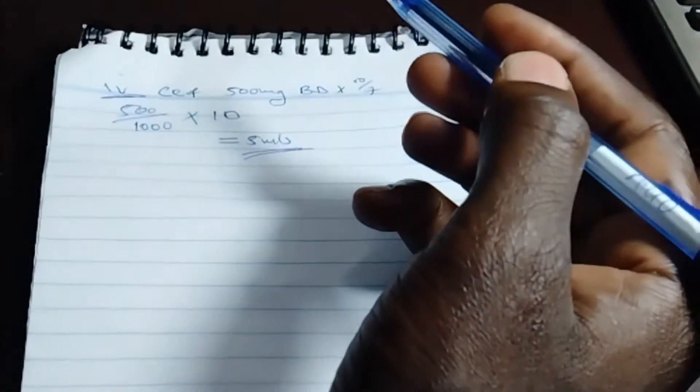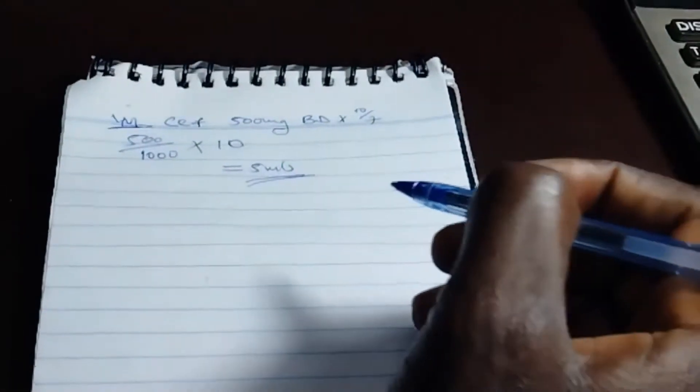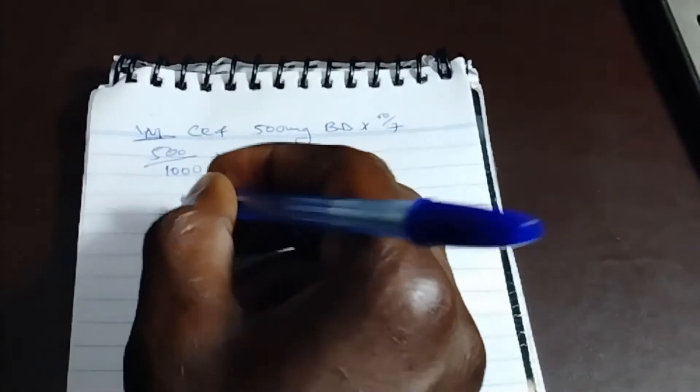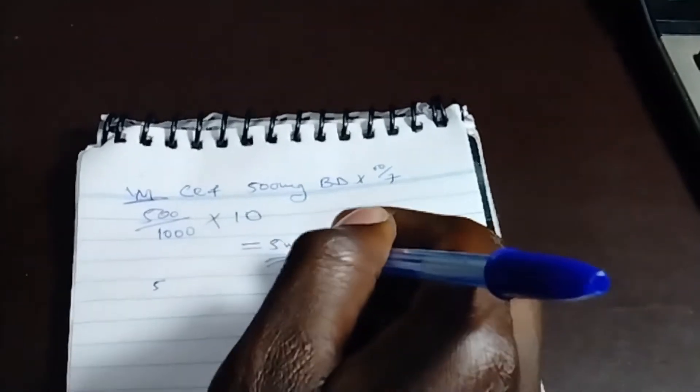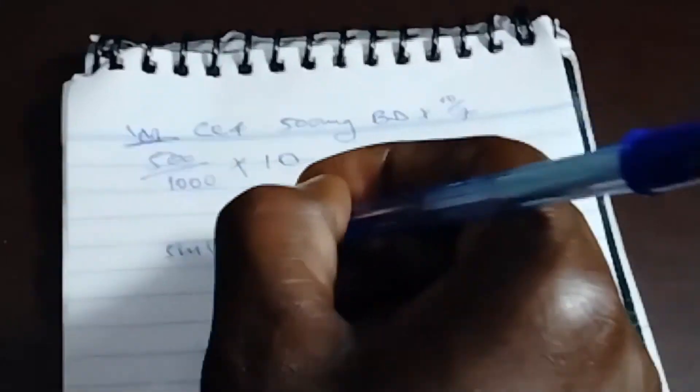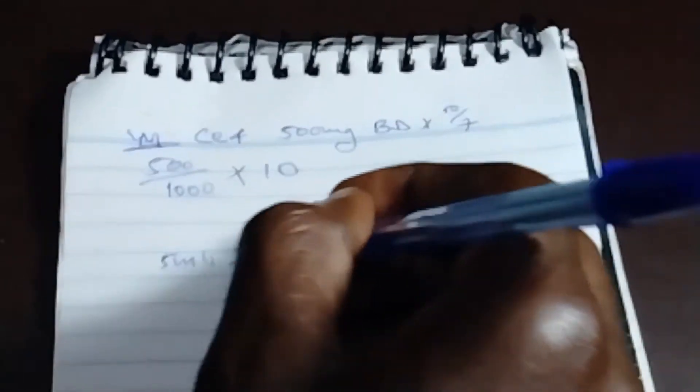That is it if they have prescribed IV or if they have prescribed IM. So let's convert this one. We are going to calculate this the same way, but the difference will be from here. These 5 mils we are going to add 1 mil of lidocaine.